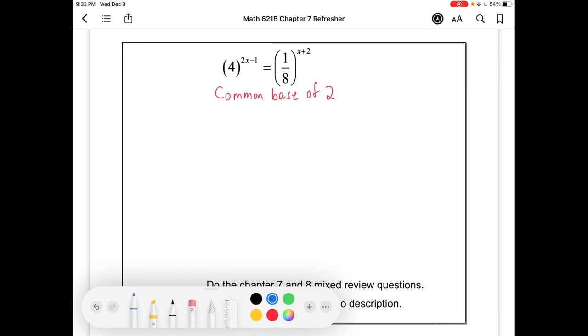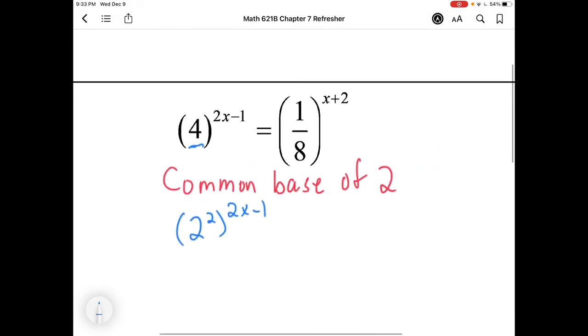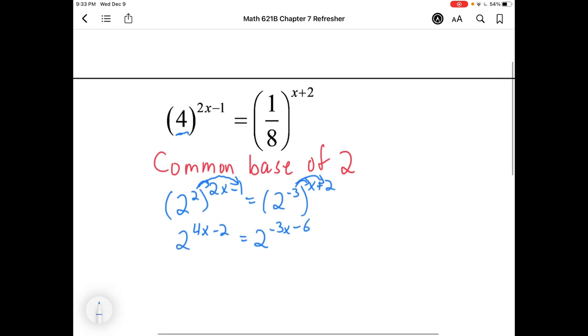Now, you could find more tricky common bases to work with, but I think this is the simplest way to do it. So for that 4, I'm not going to change its value. I'm just going to write 4 as 2 squared. For the one-eighth, again, I'm not going to change its value. I'm just going to write it as 2 to the power of something. One-eighth is 2 flipped and cubed. So one-eighth is 2 to the negative 3, all to the x plus 2. At this point, I'm going to multiply out my powers. And often, I'll see mistakes here where people remember to multiply this one and then forget to multiply by negative 1. So don't let that be you. All right. Same thing on the other ones. 2 to the negative 3x minus 6.